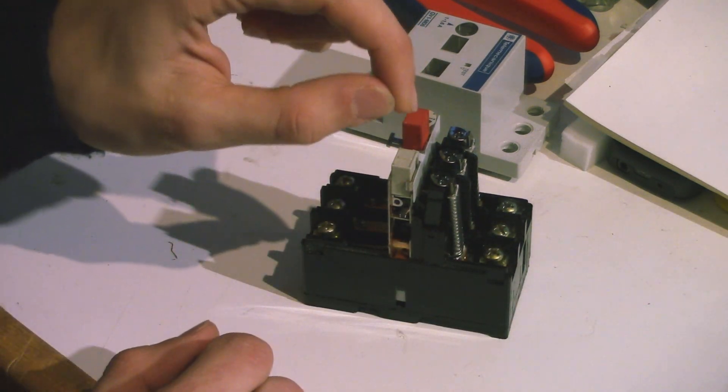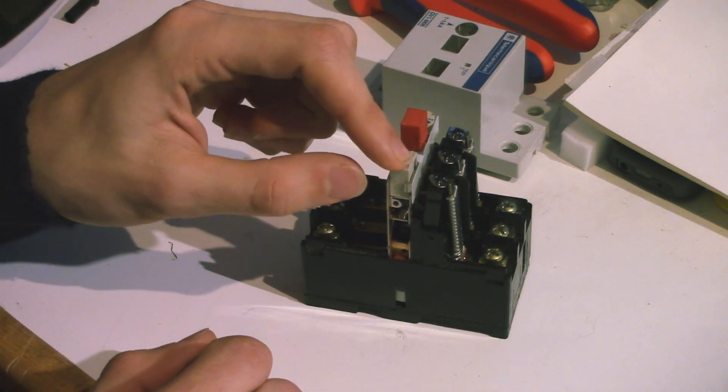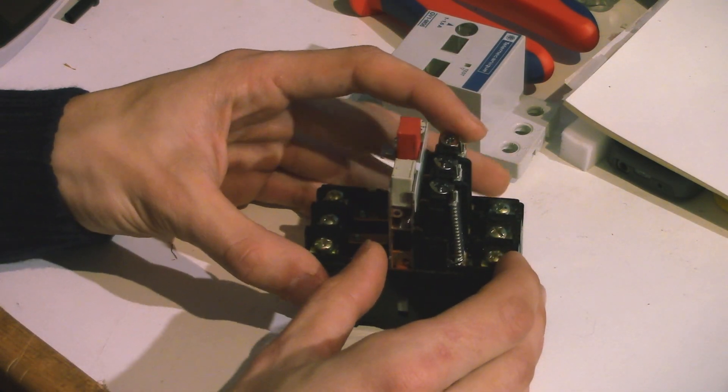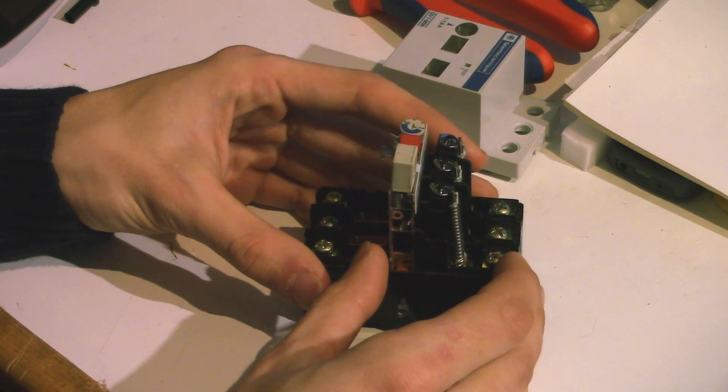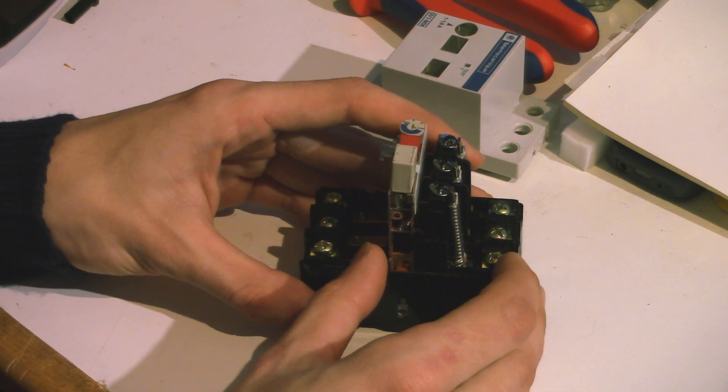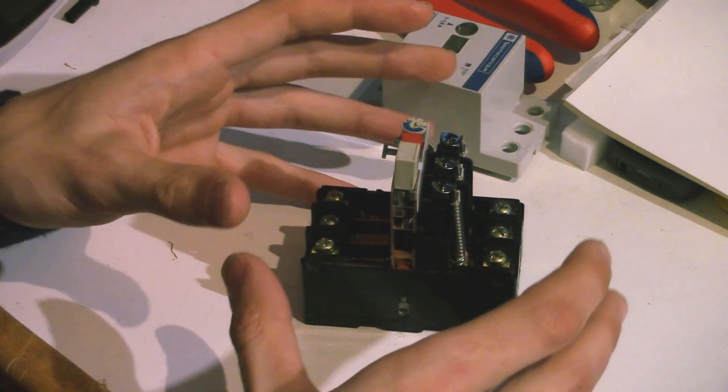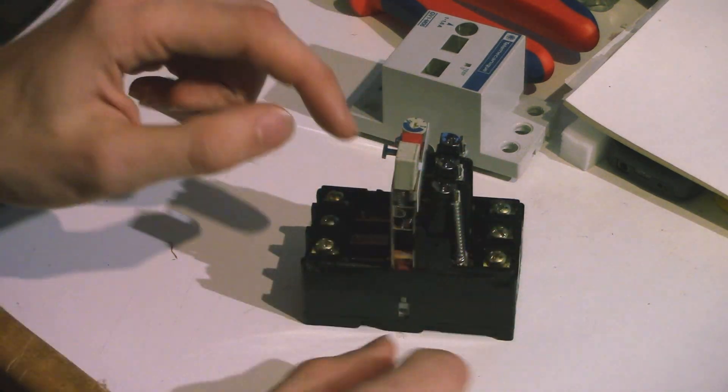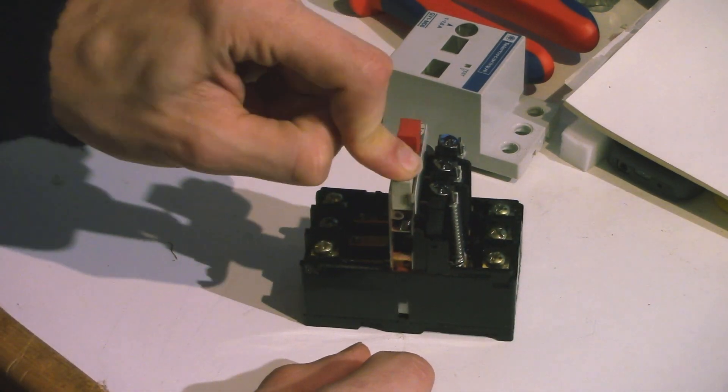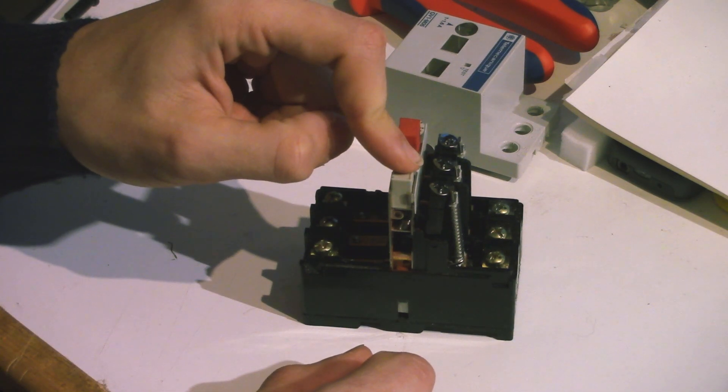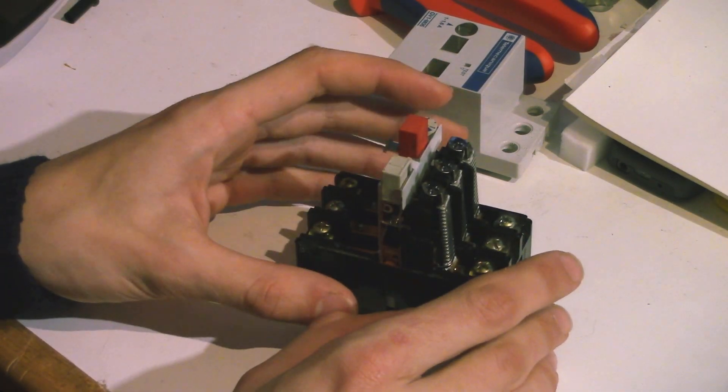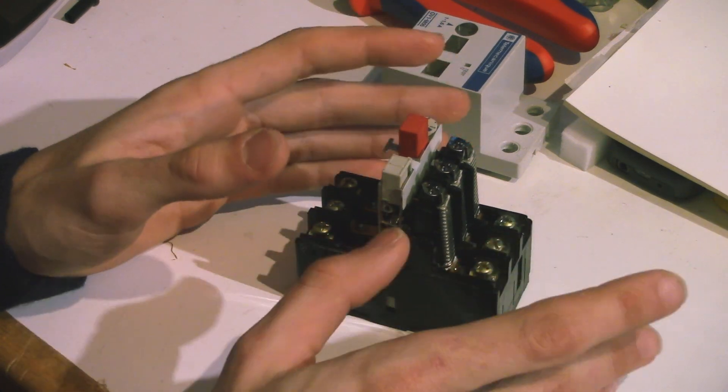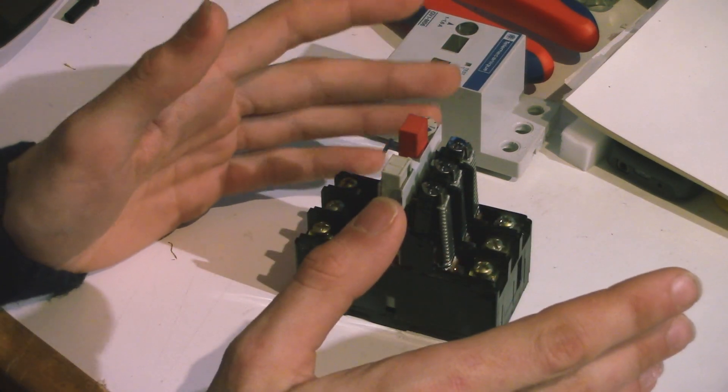So when you turn it on, you load a spring and lock it into position. And when the breaker opens, that switch is simply unlatched and it jumps back into the open position. So the energy that is required to actually open the switch is already put in by the person who switched it on. So now, of course, the question is, what causes this spring mechanism to be unlatched and this switch to jump back open?